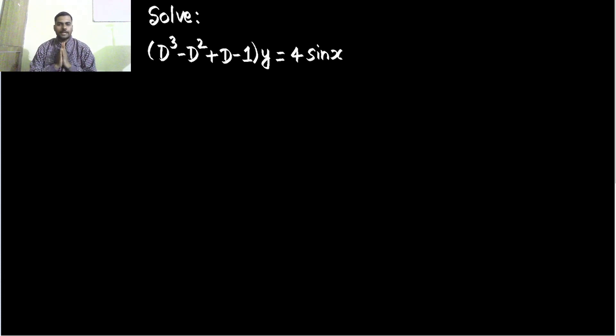Hello everyone, Namaskar, Raj Krishna on this site and let's solve this question from linear differential equation with constant coefficients. So we have to solve this D³ - D² + D - 1 operating on y equals to 4 sin x.